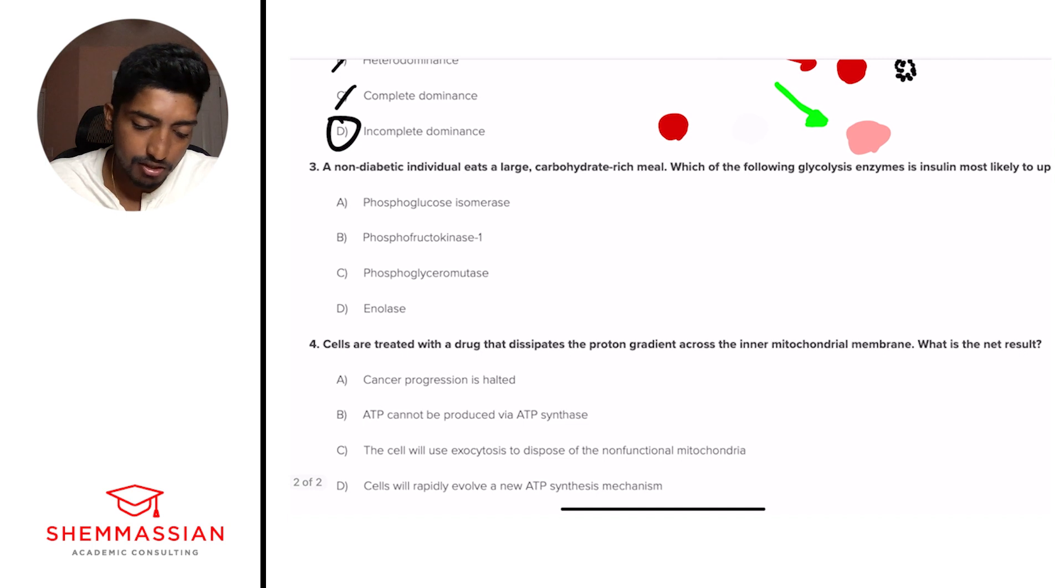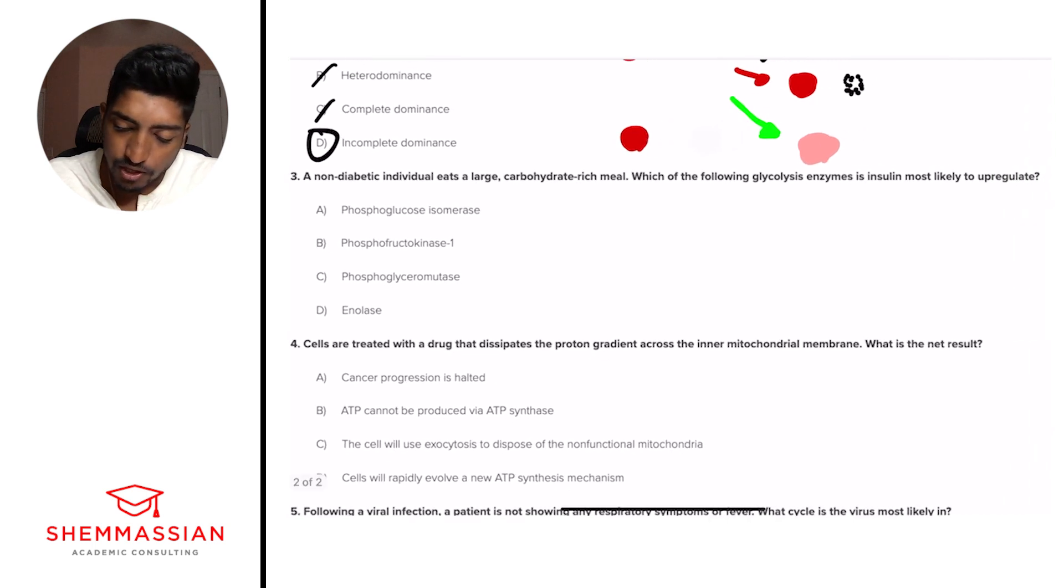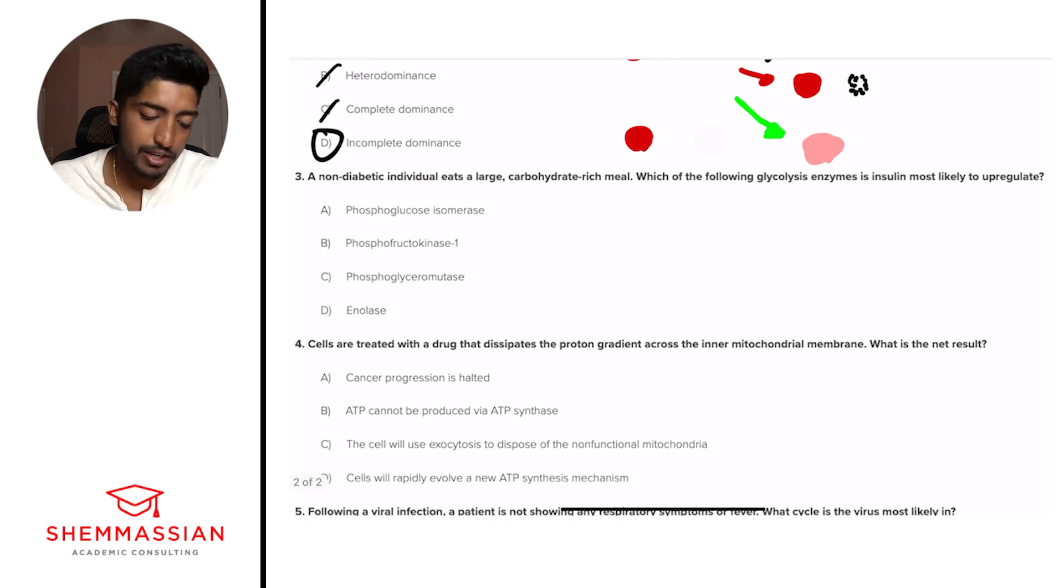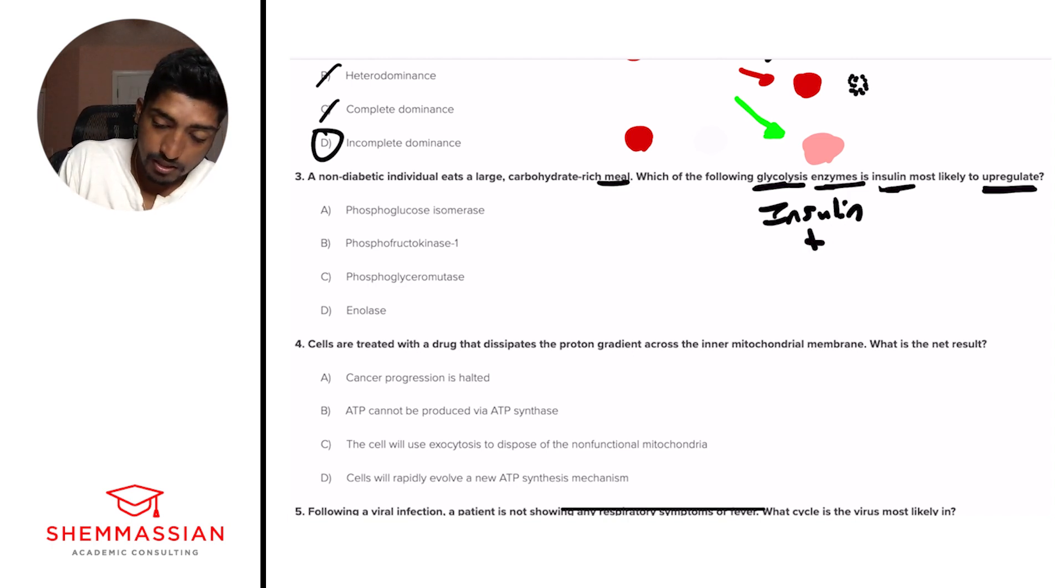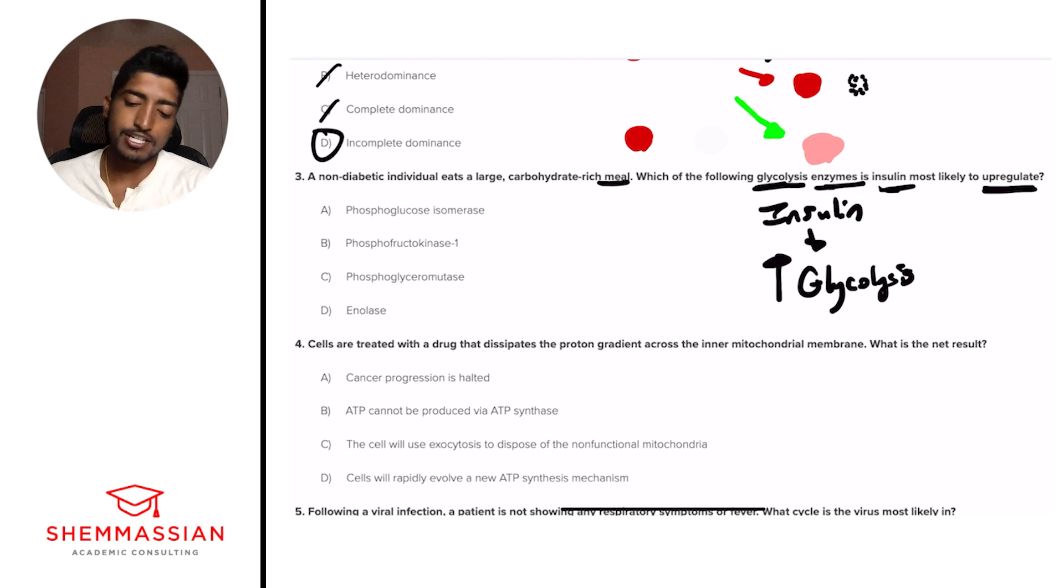A non-diabetic individual eats a large carbohydrate-rich meal. Which of the following glycolysis enzymes is insulin most likely to upregulate? Is it A, phosphoglucosisomerase, B, phosphofructokinase 1, C, phosphoglyceromutase, D, enolase? All right, so the idea is we're just looking after a big meal, eating, which of the following glycolysis enzymes is insulin most likely to upregulate? So we know insulin causes an increase in glycolysis. We eat more food, we want to turn that into energy, so we're going to have increased glycolysis. And so the important part of this discrete question is not knowing necessarily each of the steps of glycolysis, but really one important detail, and that is the rate-limiting step.